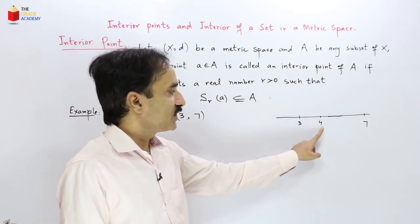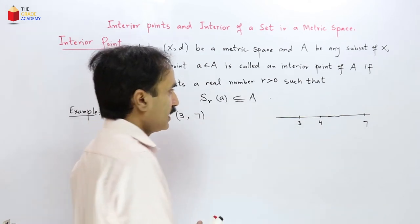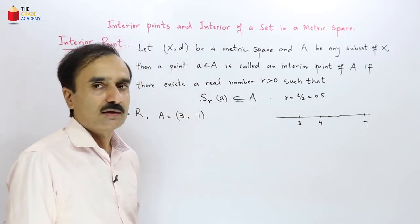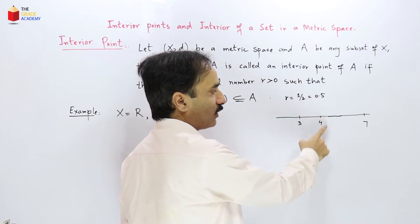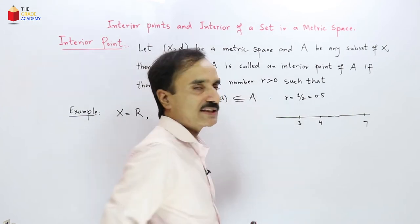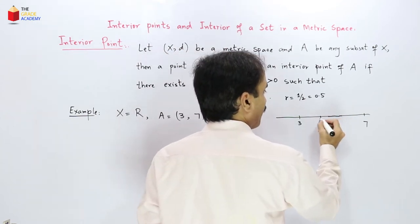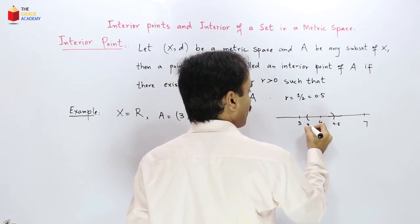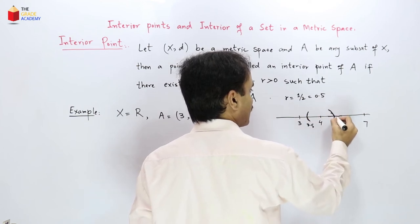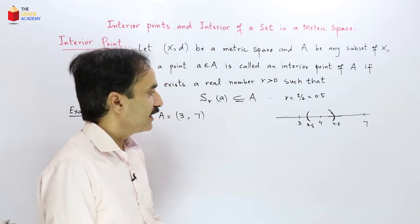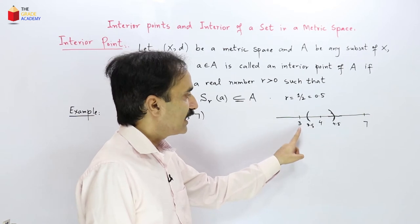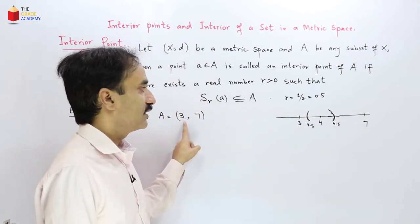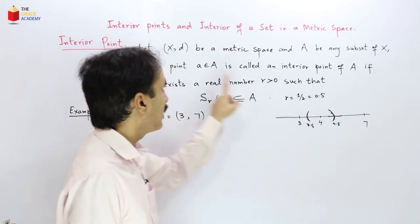Let us consider the usual metric space of real numbers and let set A be the open interval (3, 7), the set of all real numbers between 3 and 7. On the real line, let us locate the interior points. Consider the number 4 which belongs to this set. If I draw an open sphere around 4 with radius 0.5, the sphere covers from 3.5 to 4.5, and this open sphere lies entirely within the set (3, 7). So 4 is an interior point of this set.